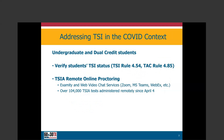Before we get into the meat and bones of the multiple measures issue, I want to provide some background context. As we know, we have all been living in a virtual world because of COVID-19 restrictions. Most of us have moved online and are continuing to figure out ways to address our students optimally in a virtual world. Many institutions are still trying to figure out exactly what their policies will be in the fall — likely some combination of online and in-person.